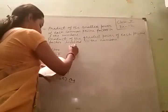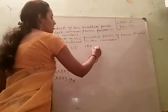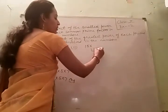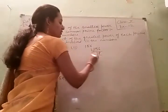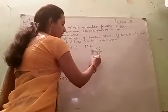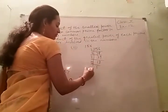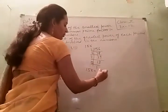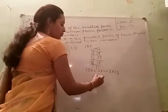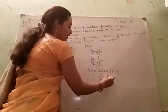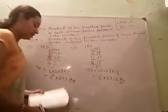Second part is 156. Find the prime factors of 156. Divide by 2: 2 × 78. Again by 2: 2 × 39. Then 3 × 13. Then 13. So 156 = 2 × 2 × 3 × 13, which is 2² × 3 × 13.